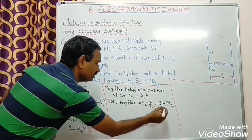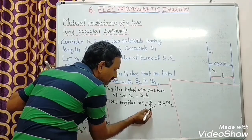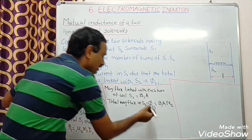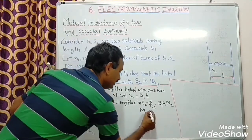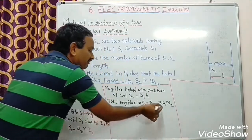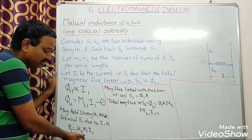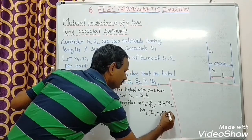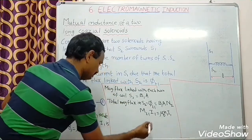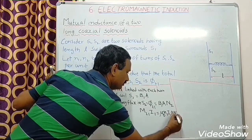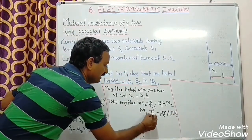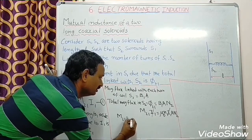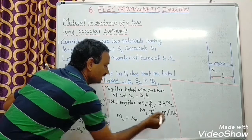From this I can write, in the place of Φ21 from equation 1, I can write M21 into I1. So, M21 into I1 equals B1, which means μ0 small n1 I1, into A into N2. Here, both sides I1 cancels. So, I got M21 equal to μ0 small n1 into A into N2.